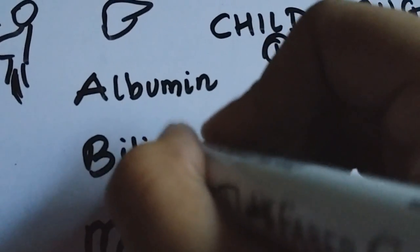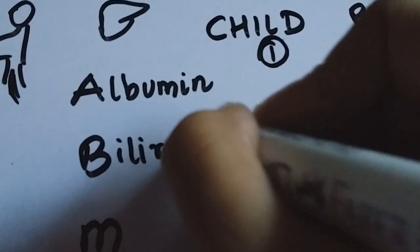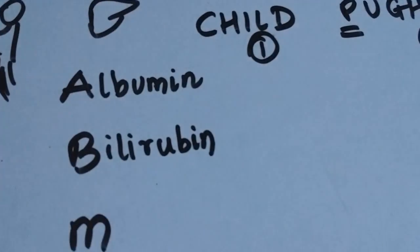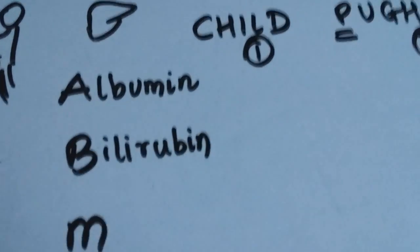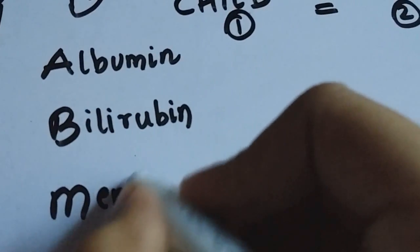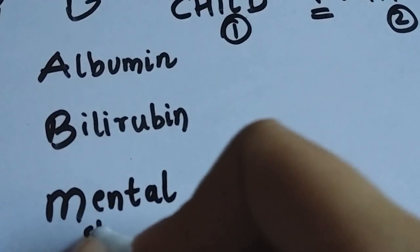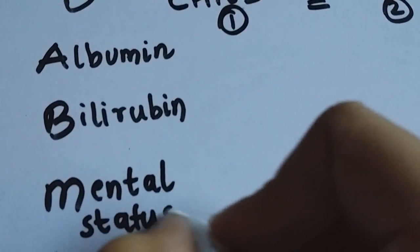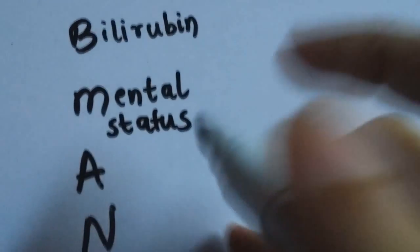A is for albumin, and this is because albumin is produced by the liver. B is for bilirubin because if your liver is not functioning, you are going to have a buildup of bilirubin in your body. M is for mental status, and this is because patients with liver failure also have hepatic encephalopathy. And A is for ascites.